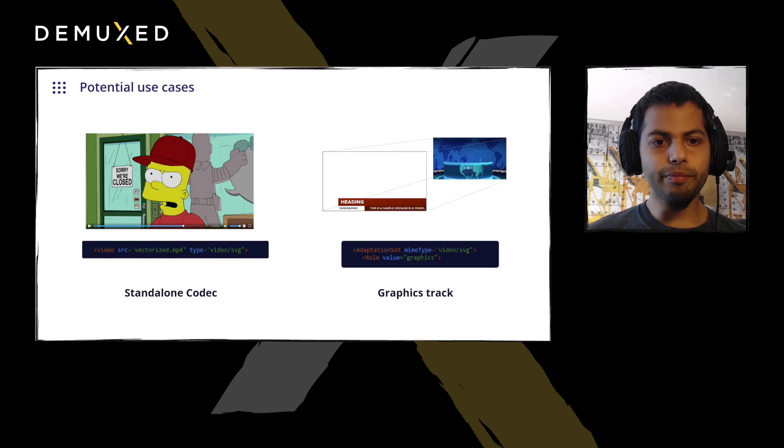Either way, in terms of potential use cases, you could imagine if you had a lot of screen and animated content, you could imagine vectorization being used as a standalone codec. As well, you can imagine SVG being used to render not the whole video, but a part of a video. So when you have computer graphics overlays, such as sports scoreboards or news tickers, you could imagine SVG being used to render those parts of the video via a dedicated graphics track and having that graphics track overlaid on top of the live video feed in real time on the end user's device and not initially hard-coded into the video stream at the source of the video.